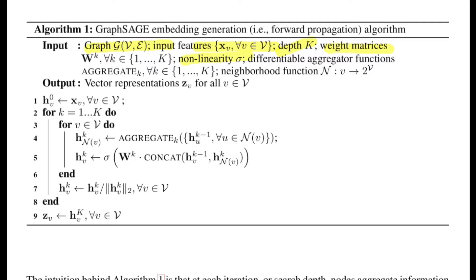The depth k defines how deep you want to go in the network. You also have the weight matrix, non-linearity, and aggregator functions — each hop has its own aggregator function with shared parameters. The neighborhood function takes a node v and finds all its neighbors. The output is a dense vector representation for every node. The value of k is usually set to two or three maximum, because going deeper would mean every node takes information from all nodes, which could lead to similar embeddings across all nodes.